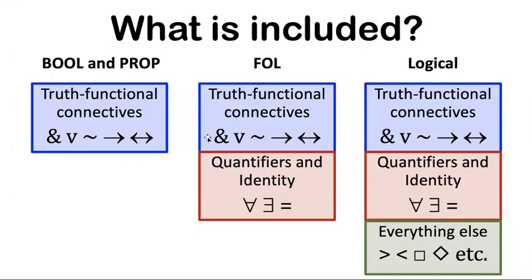FO, the first order level, includes all of that stuff, but it also includes the quantifiers and identity. So maybe a sentence is false, not just because of the truth functional connectives, but also because of what identity means or what the quantifiers mean. Then that would count as a first order falsity, not a total logical falsity.